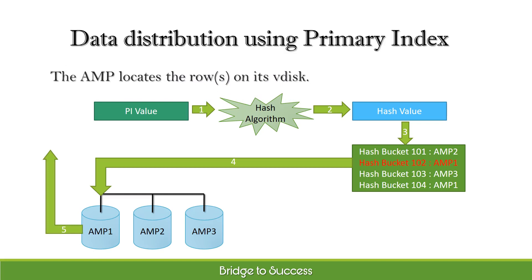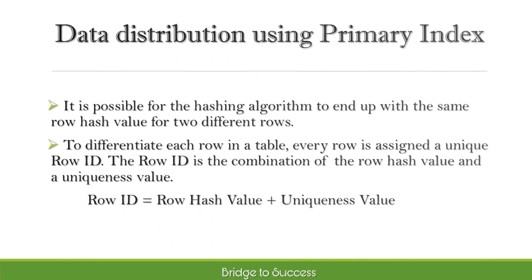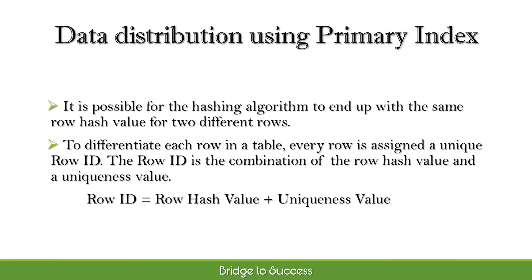The AMP locates the row on its VDISK. The data is sent over the BYNET to the PE, and the PE sends the answer set back to the client application. It is possible for the hashing algorithm to produce the same row hash value for two different rows. To differentiate each row in a table, every row is assigned a unique row ID. The row ID is the combination of the row hash value and a uniqueness value: Row ID = Row Hash Value + Uniqueness Value.